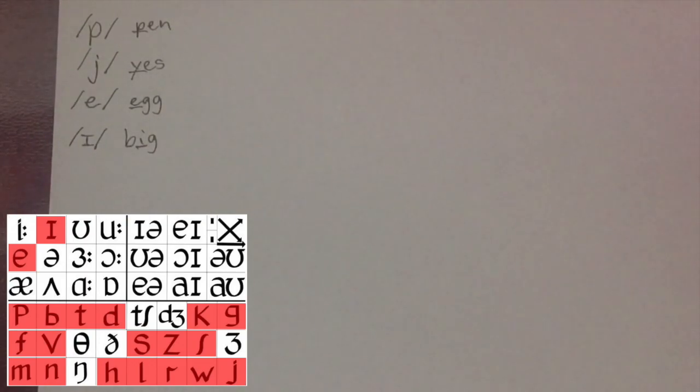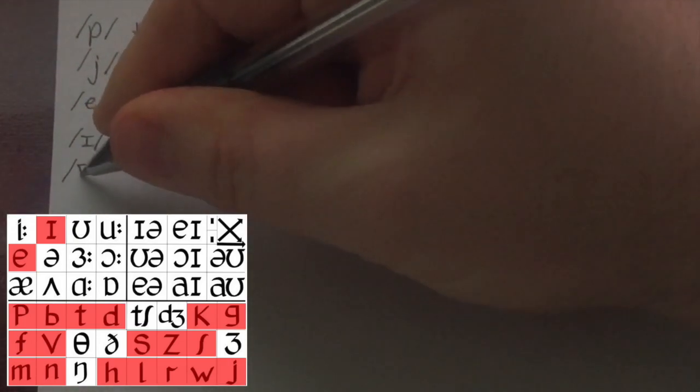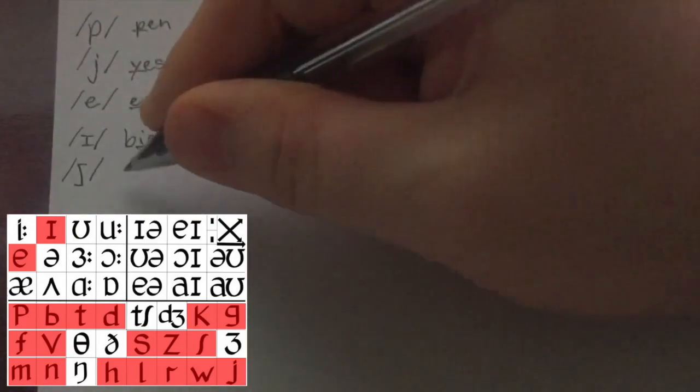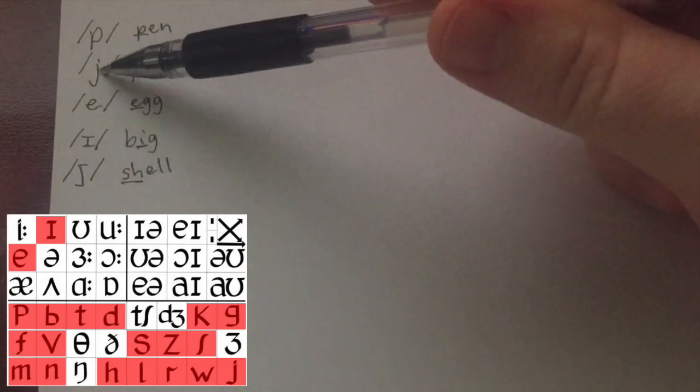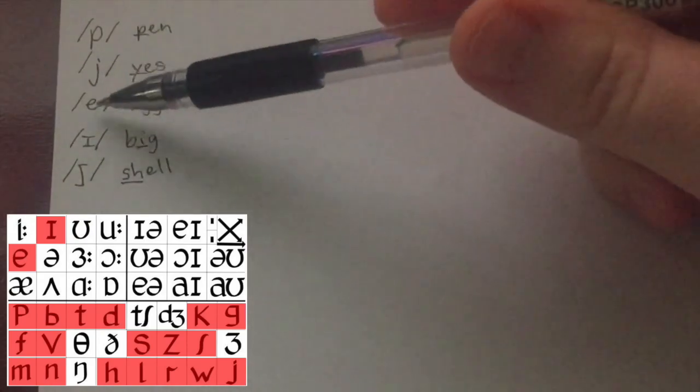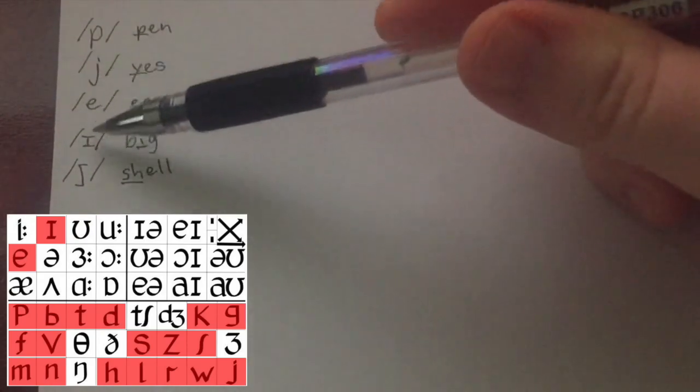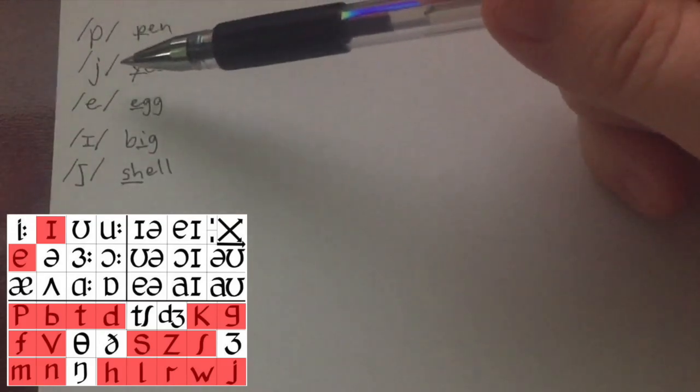And the final one is sh, as in shell. Sh. Now, we'll focus mainly on these four sounds and the consonants you should be familiar with.